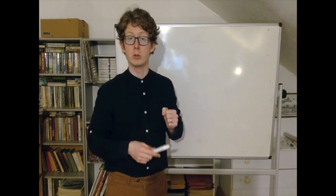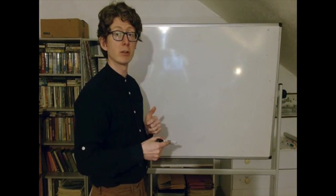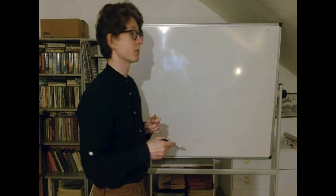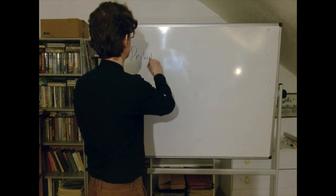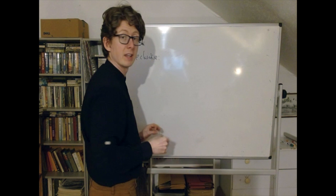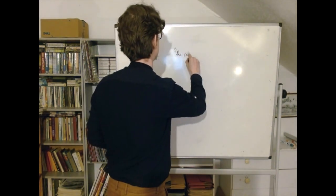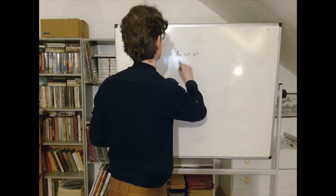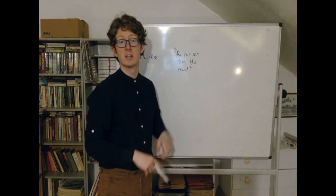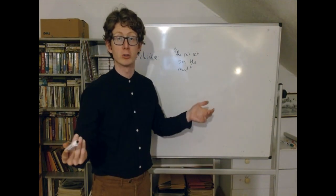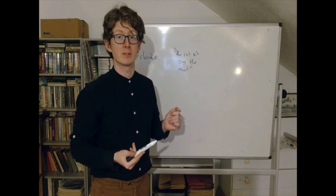Let's talk about mood first. As we're going to use the term, there are basically three different sentence moods. There's declarative — things of the form like 'the cat sat on the mat,' 'it's raining,' 'I'm hungry,' 'some turtles like jazz.' These are all examples of declarative sentences.